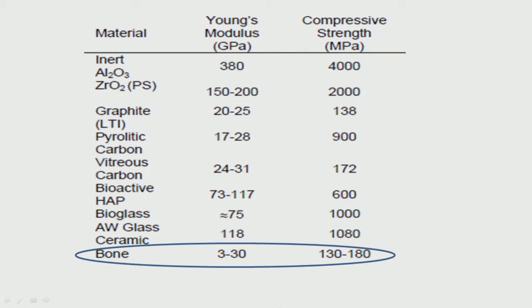Once again we can see alumina, zirconia, graphite, carbon, hydroxyapatite, bioglass — Young's modulus varies a lot. For vitreous carbon and pyrolytic carbon it is very low; hydroxyapatite is about 73 GPa; alumina goes up to about 380 GPa. Compressive strength of carbon is comparable to bone material; hydroxyapatite compressive strength is quite high. This table shows how each oxide varies and carbon has reasonably good properties compared to bone.